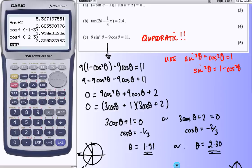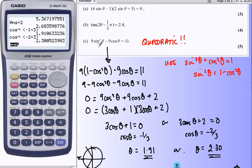And the important thing to remember here is that we've got to make it all cosine, create a quadratic, factorize, solve, done.